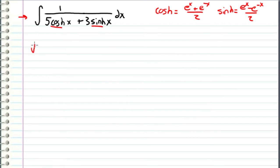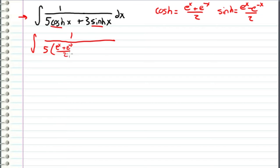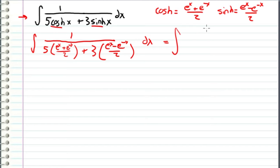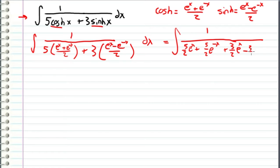Let's start the integral by substituting in the exponential expressions for cosh and sinh. We can turn this integral into: e^(-x)/2, plus three times (e^x - e^(-x))/2, dx. Distributing the five and three, we get: (5/2)e^x + (5/2)e^(-x) + (3/2)e^x - (3/2)e^(-x), with respect to x.